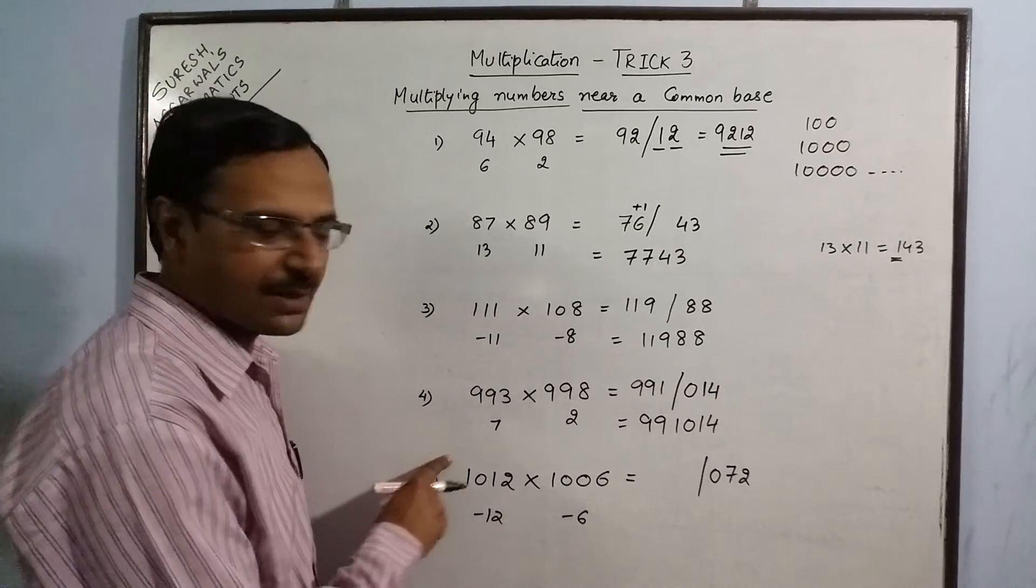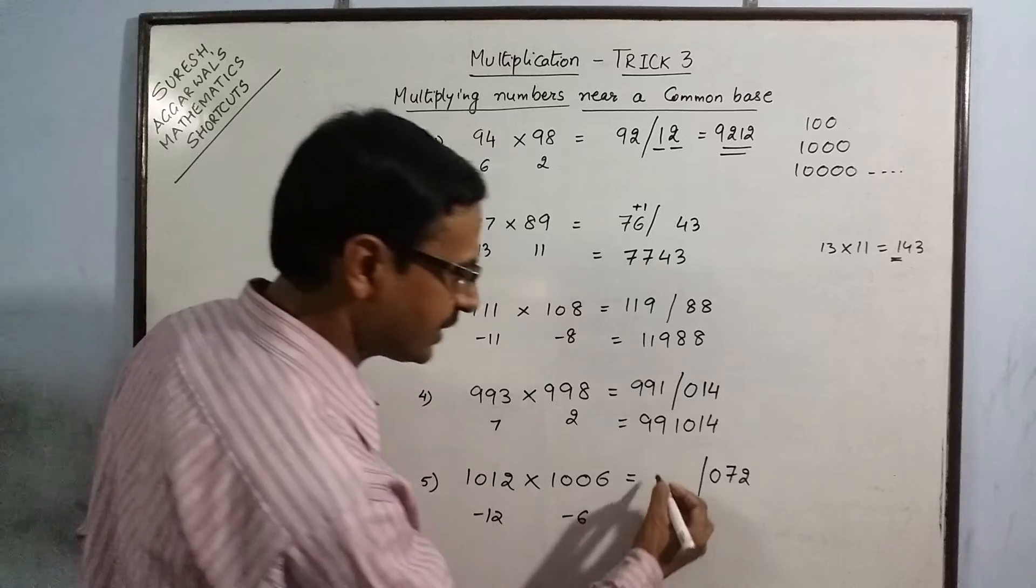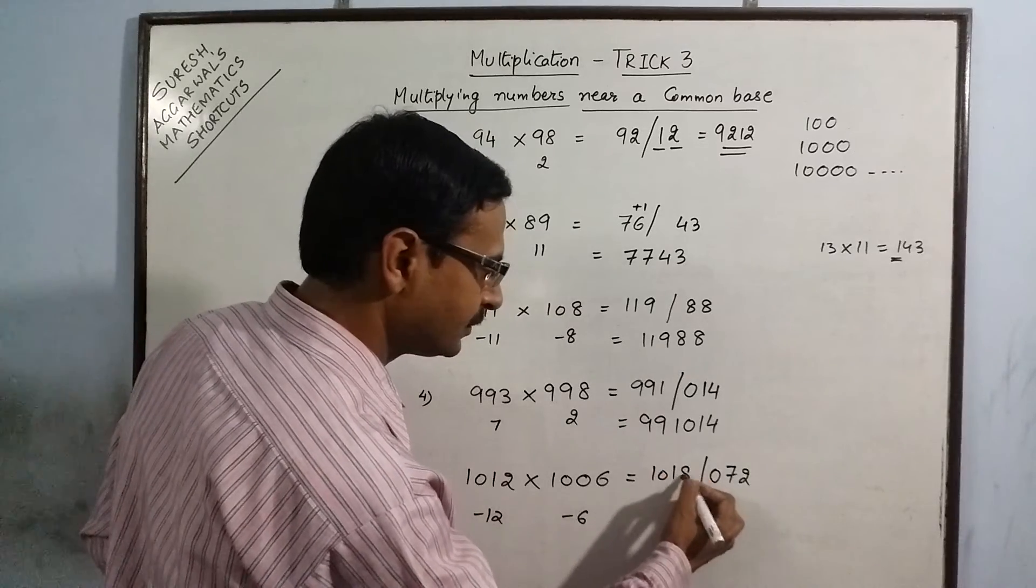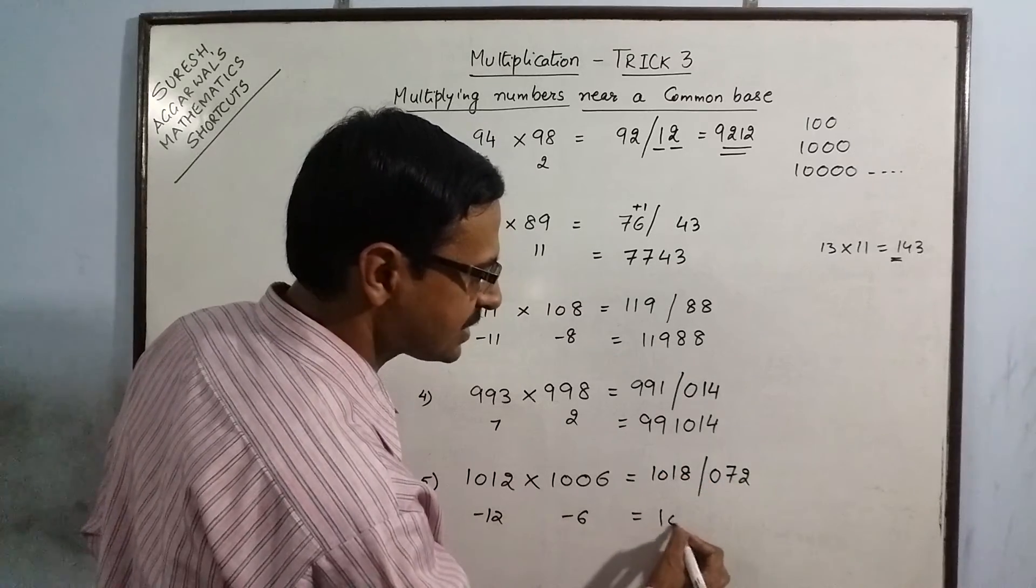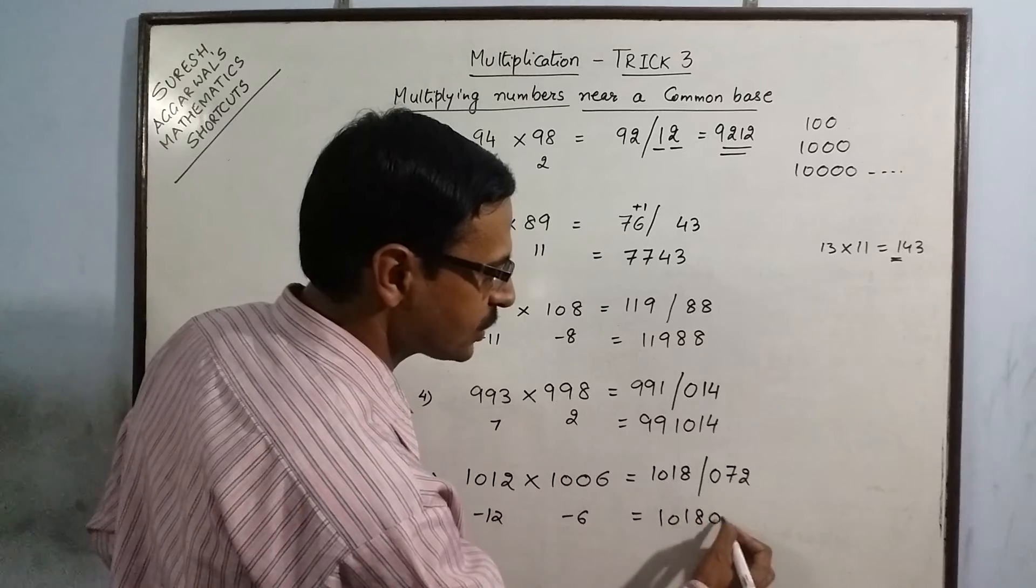1012 minus minus 6 is 1018. So, the final answer is 1, 0, 1, 8, 0, 7, 2.